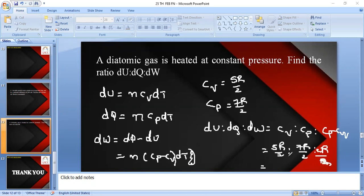Everywhere you can cancel, divide by 2 here, then you will just remain with 5 is to 7 is to 2. So this is the answer for the ratio dU is to dQ is to dW.